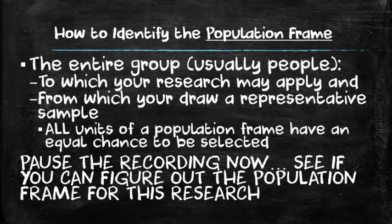Population frame defined means the entire group — usually people, but it could be a country, a city, or something of that sort — to which your research applies, and from which you're going to draw a sample. Now, sampling isn't always possible. Sometimes you have a very small group that constitutes your population frame. For example, your population frame may be one kindergarten class, in which case you're not going to draw a sample — you're just going to use the entire class as your population frame.